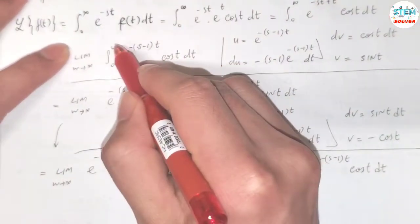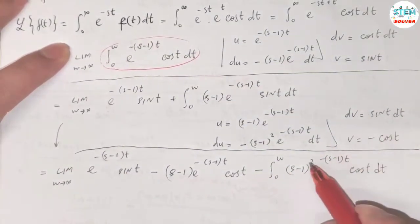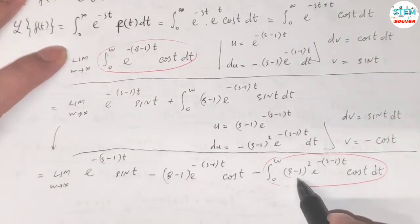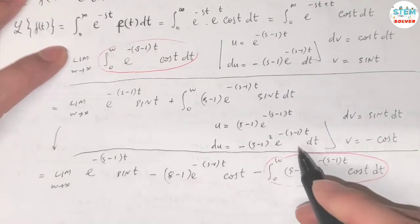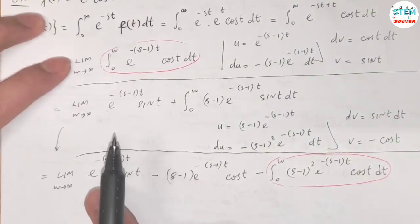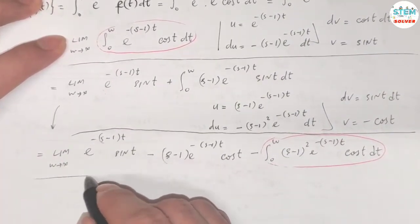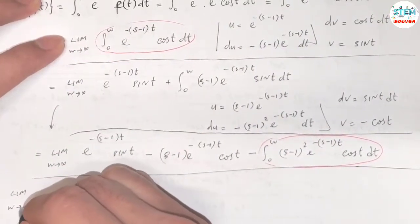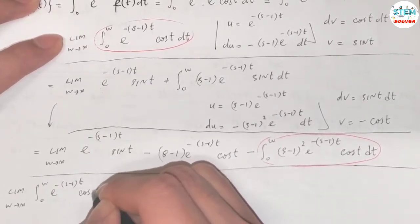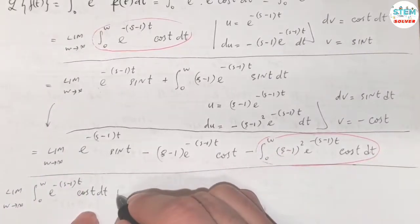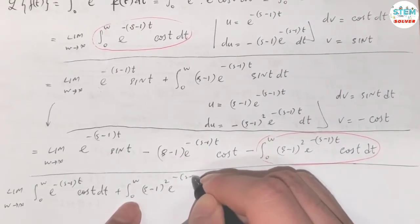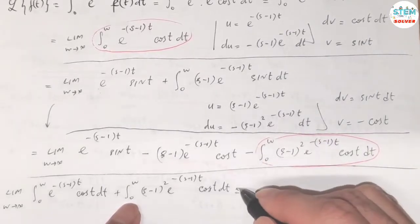Notice that the original integral appears both on the left side and on the right side. The only difference on the right is a constant factor, since we're integrating with respect to t, so the other variable is just a constant. I'm going to move the repeated integral to the left side. So I have: the limit as w goes to infinity of the integral from 0 to w of e^(-(s-1)t) · cos(t) dt, plus (s-1)² times that same integral, equals the boundary terms.